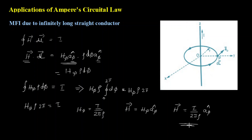Amazing — is this not the same expression which we got from Biot-Savart's Law? I am getting the same expression for magnetic field intensity due to an infinite conductor. Now you can decide that this method looks much easier compared to the derivation steps required when applying Biot-Savart's Law. It is always good practice to also write the expression for B vector, since B equals mu times H. So B vector is mu I divided by 2π rho, a-phi cap, in Weber per meter squared.